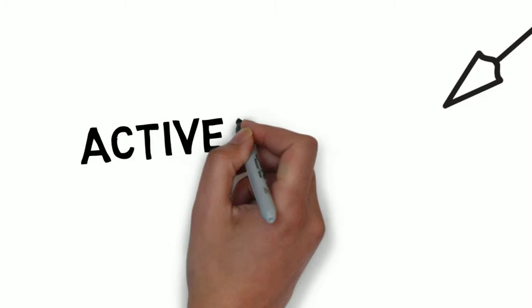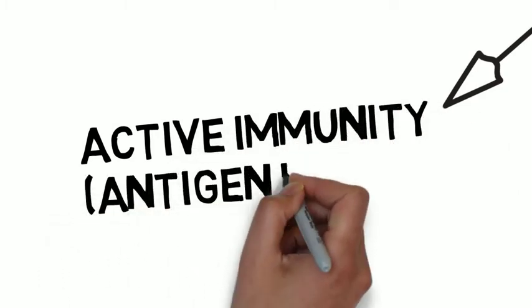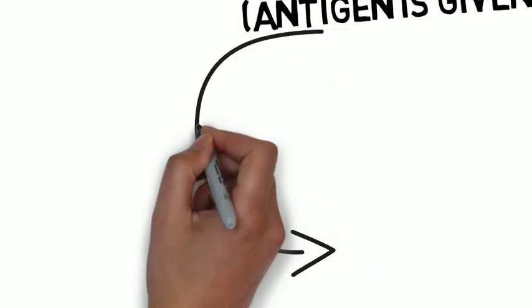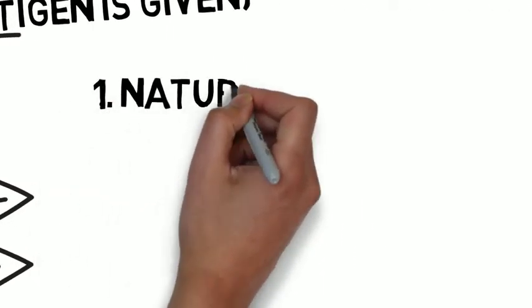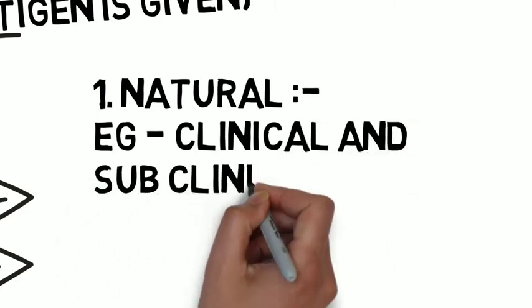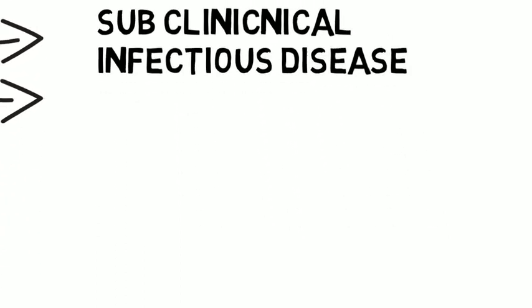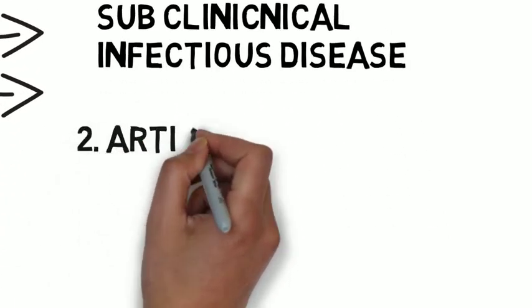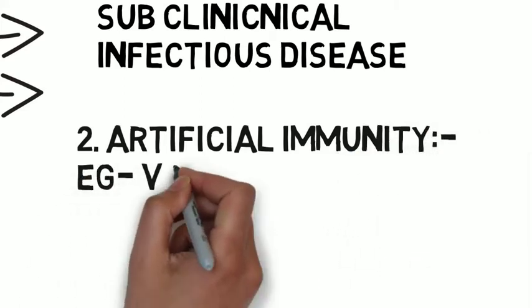Active immunity is also known as antigen given activity. It also has two classes. The next one is natural, for example clinical and subclinical infectious diseases. The second one is artificial active acquired immunity, for example vaccines.